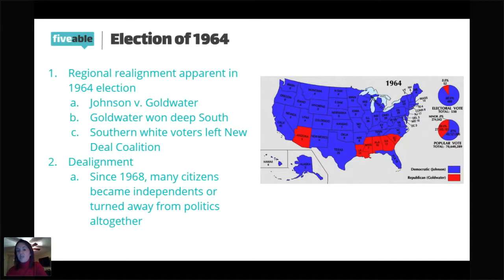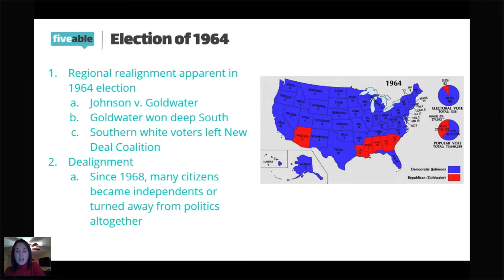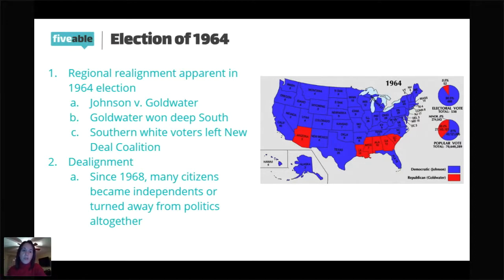In 1964 it's just a few small Southern states, but by 1968 it goes across the entire South. Now the South tends to vote Republican. The reason is the Democratic Party really became the party of the civil rights movement, and Southern white voters are angry that Democrats are supporting the civil rights movement. Those Southern white voters leave the New Deal Coalition, leave the Democratic Party, and join the Republican Party. Still today — and these are generalizations — if you look at election maps, the South tends to vote Republican more so than Democrat.